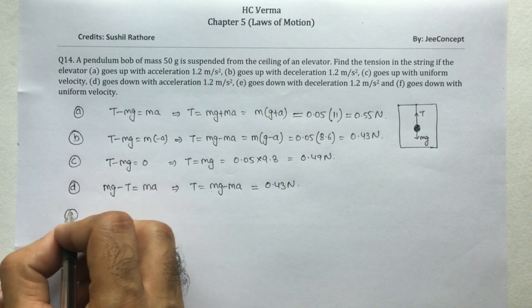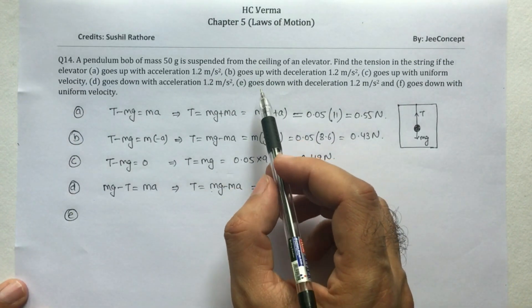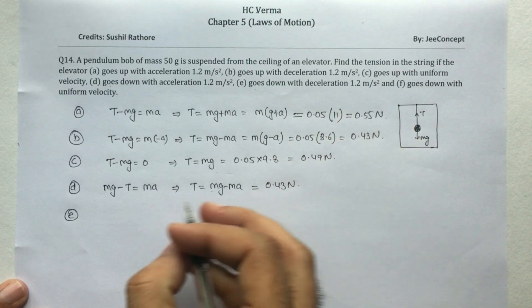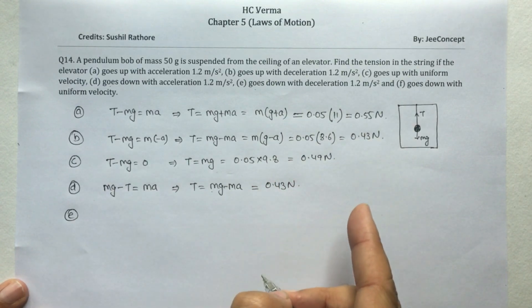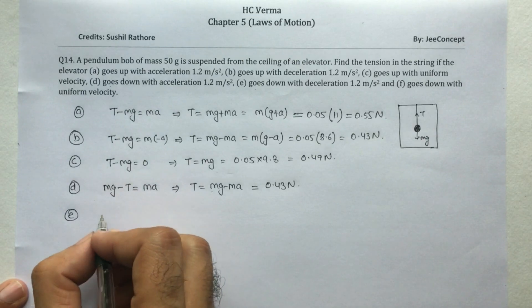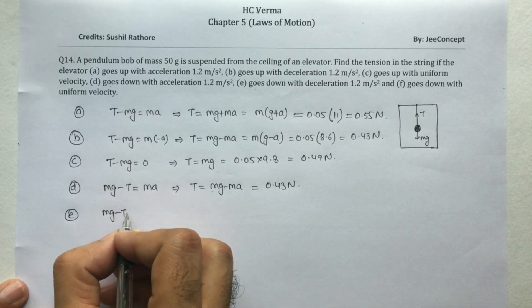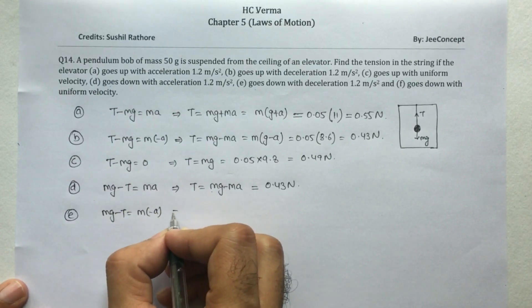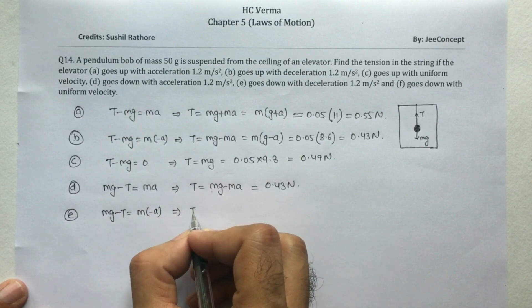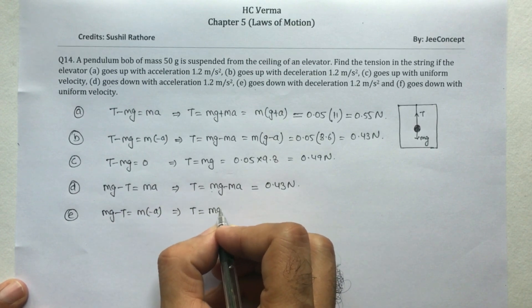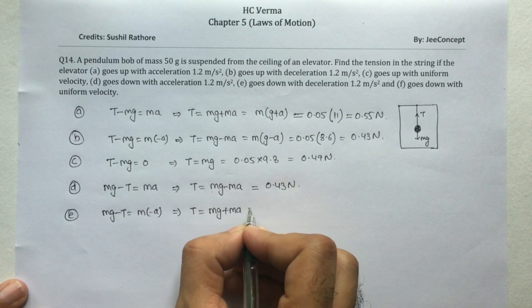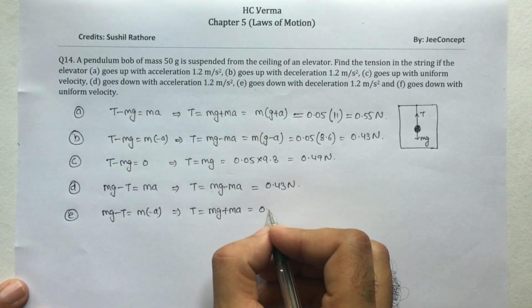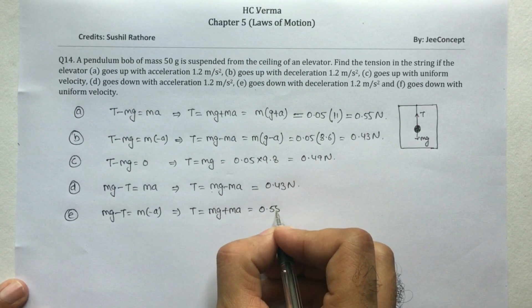For part E, the elevator is going down with deceleration of 1.2 m/s². The elevator is moving downward, so mg minus T equals m times (minus a). This gives T equals mg plus ma. We have already solved mg plus ma, so the answer is 0.55 Newton.